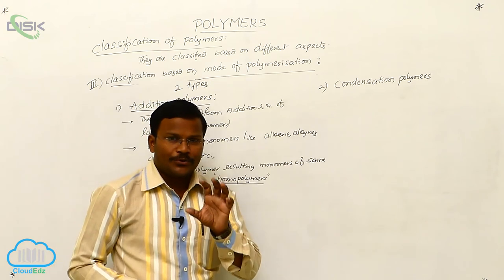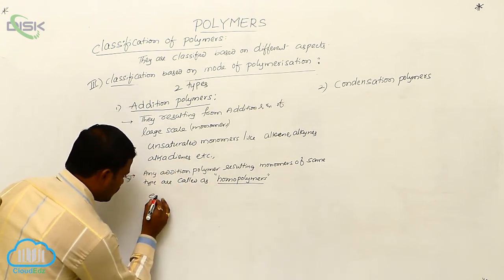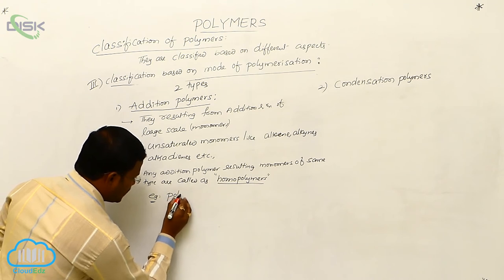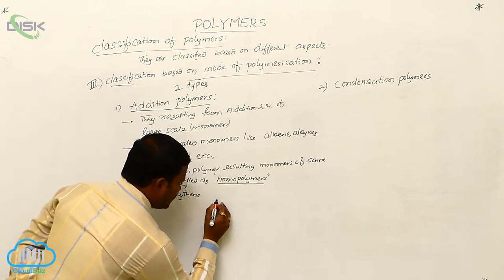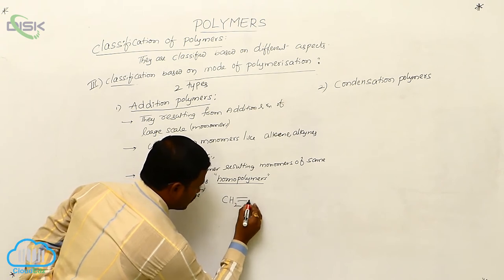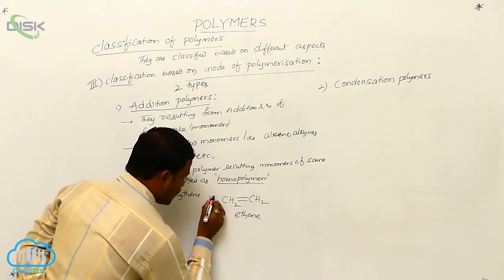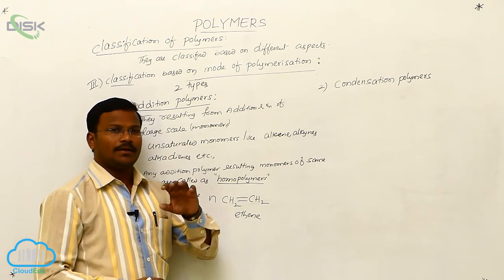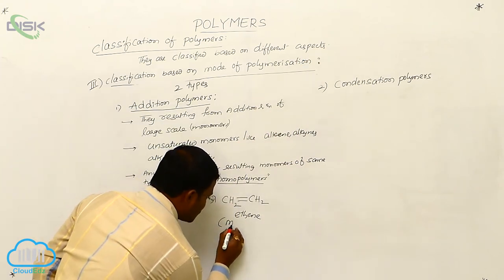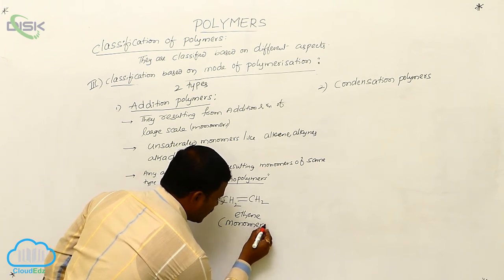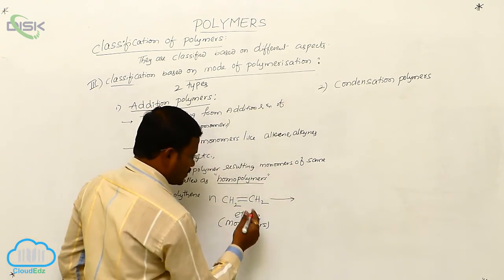For example, let us consider polythene and write its synthesis. The monomer is ethene: CH2=CH2. When n number of ethene molecules — where n may be 10, 20, 100, 1000, etc. — are considered, ethene acts as the monomer because it is going to produce a polymer.